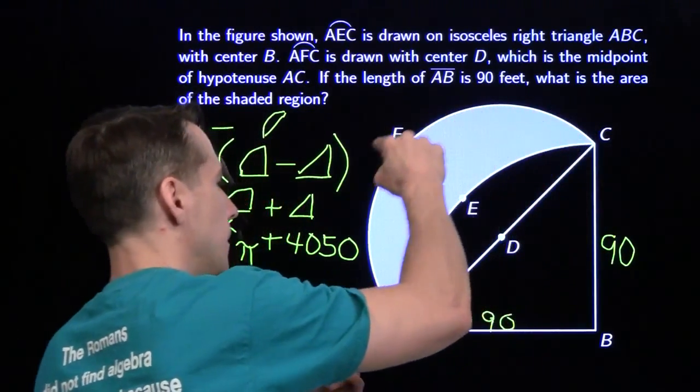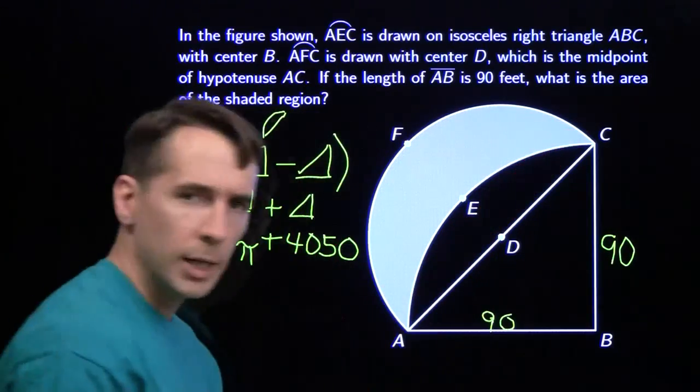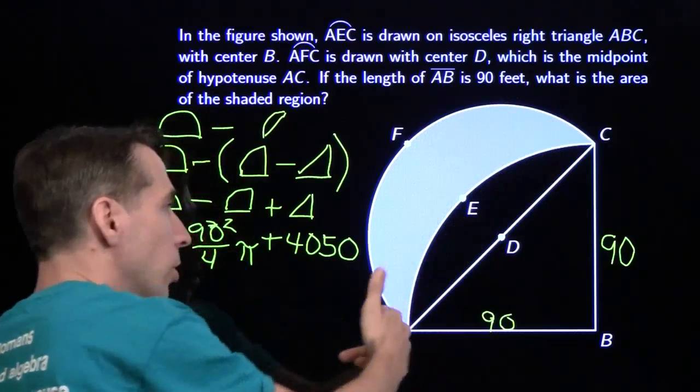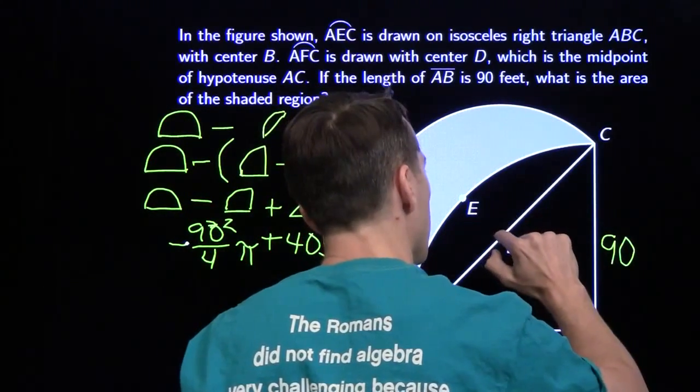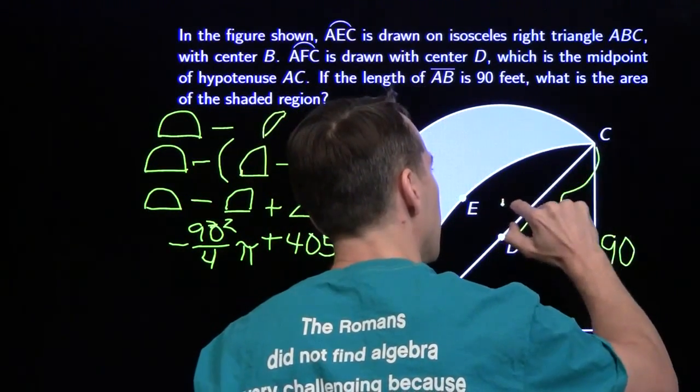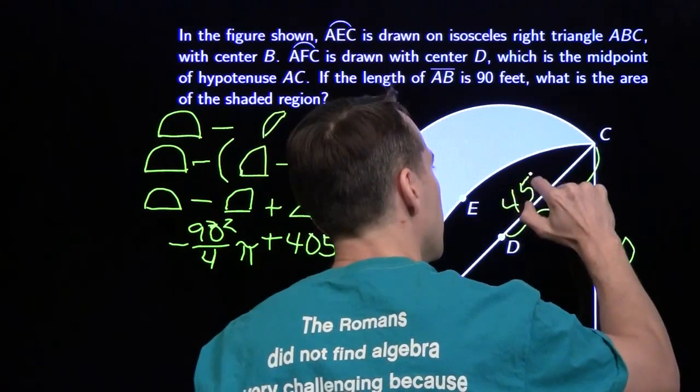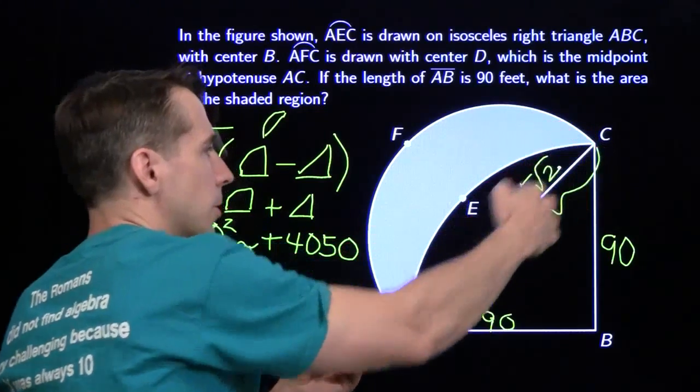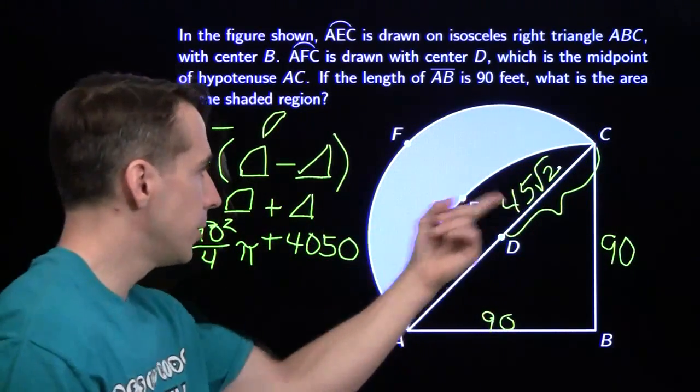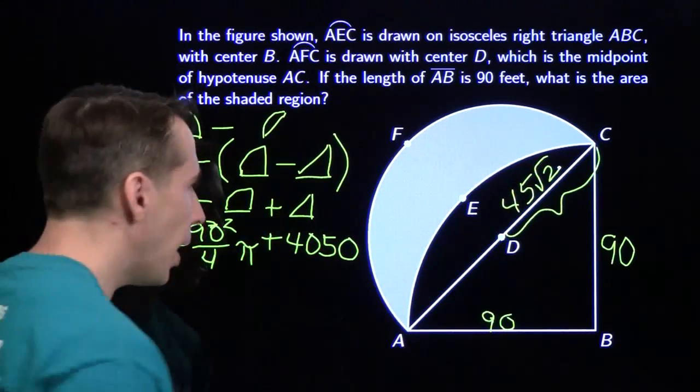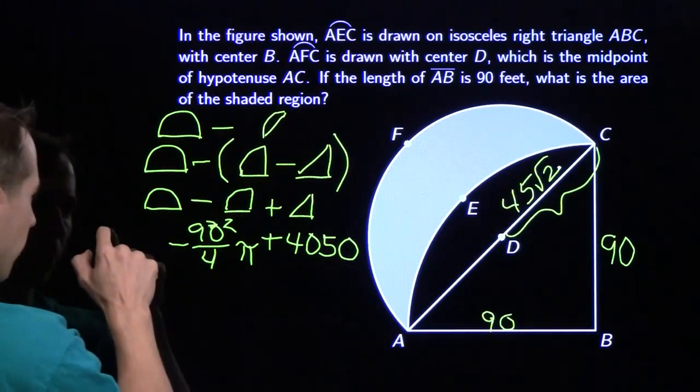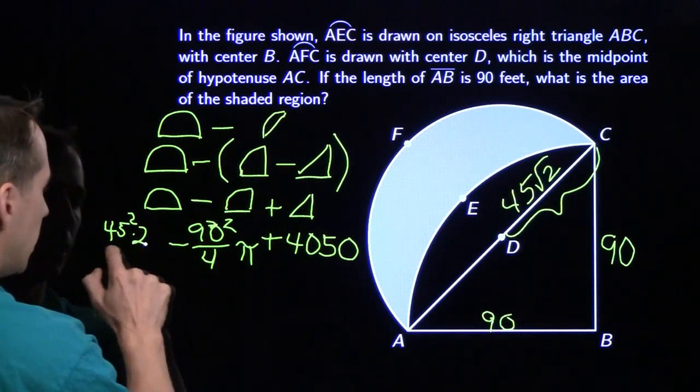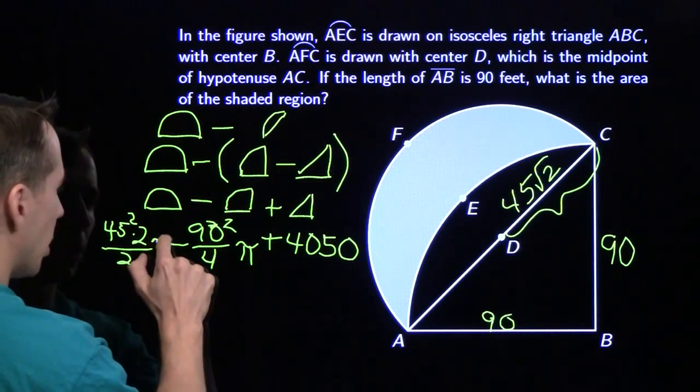Now we have to take care of the semicircle. We're going to need the radius of the semicircle. The legs of our isosceles right triangle are each 90. That means the whole diameter is 90 times the square root of 2, which tells us that our radius is 45 times the square root of 2. To get the area of our semicircle, we're going to square this and divide by 2 because it's a semicircle and multiply by π. When we square this, we're going to get 45 squared times 2 divided by 2 and multiply by π.